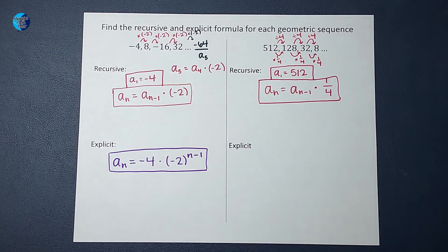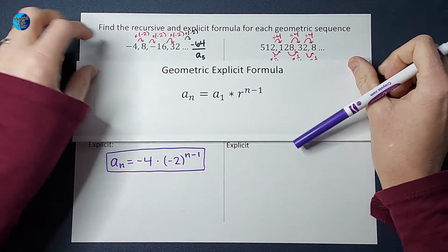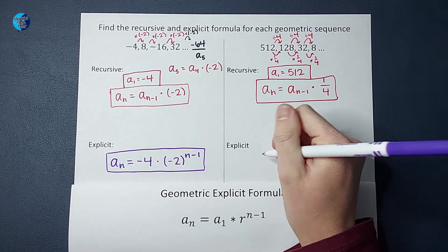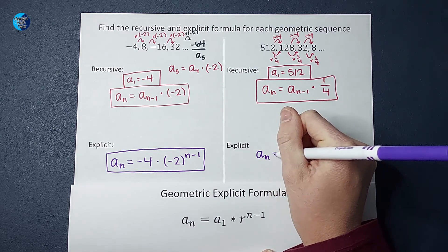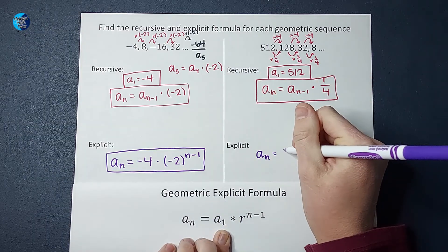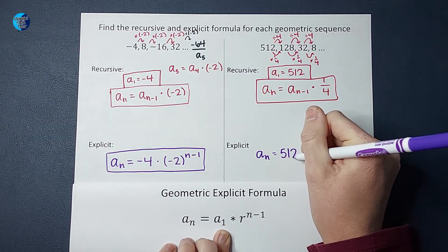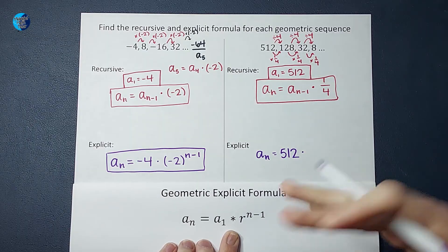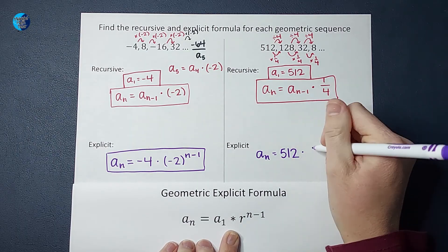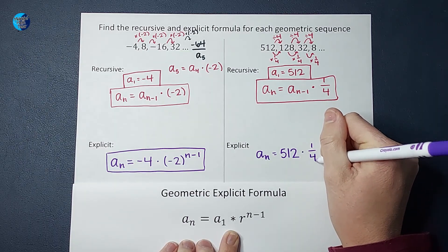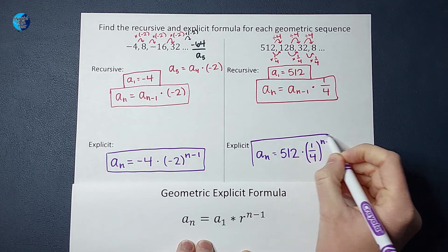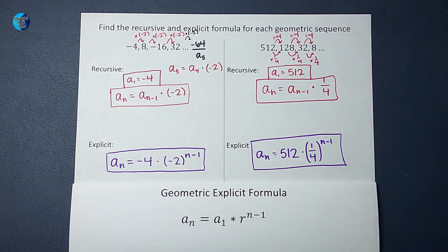Let's figure out the explicit formula for this guy. For this one, whatever number you want to find, A sub N, take the first term in your sequence, which is 512, and multiply by the common ratio. This is kind of why we like to think of it as multiplying by a fraction instead of dividing. So we're multiplying by one-fourth to the N minus 1 power. That is my explicit formula. Anyone could use this, plug in whatever place they want for N, and figure out that number in the sequence.